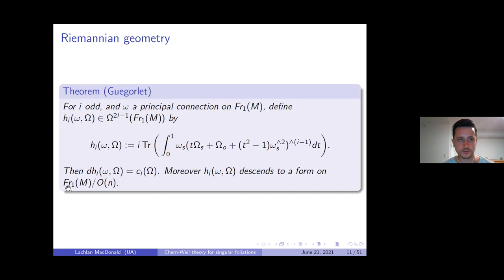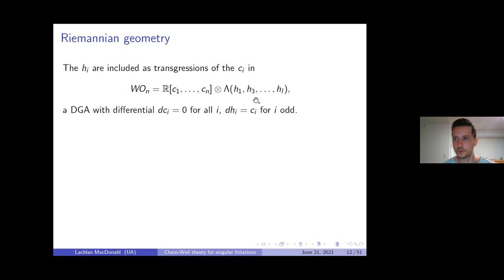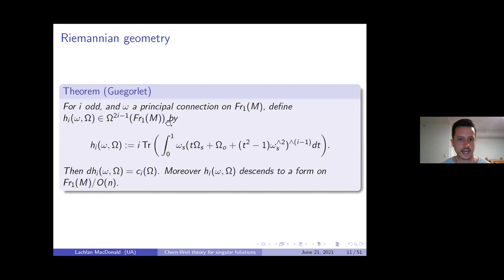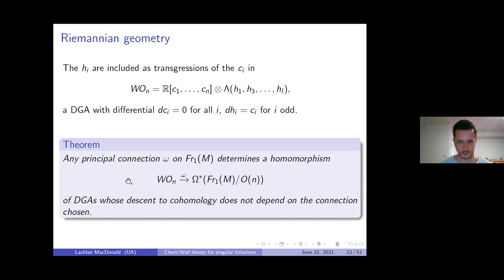We have the ordinary polynomial algebra generated by the c_i's. We know the odd c_i's are transgressed by h_i's, so we adjoin it with an exterior algebra on these odd generators h_i. The differential in this algebra W(O) is defined by setting the c_i's to be closed, and d(h_i) = c_i whenever i is odd — exactly replicating the transgression formula. Then we have a theorem building up to foliations: any principal connection form on the one-frame bundle gives a homomorphism of differential graded algebras from W(O) to differential forms on one-frames modulo the orthogonal group.